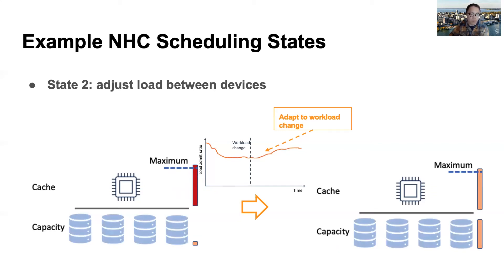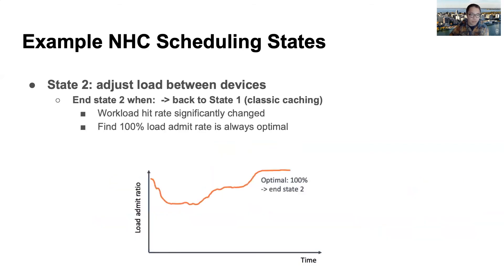NHC is also able to handle changes in workload during runtime. Finally, NHC will exit the tuning state when the workload hit rate changes significantly, or when it finds that a 100% load-admitted ratio is always the optimal solution, at which point it returns to classic caching.